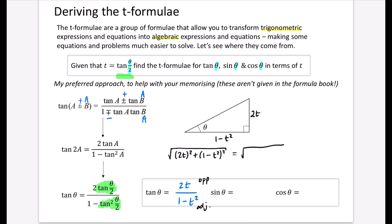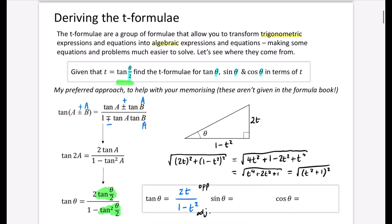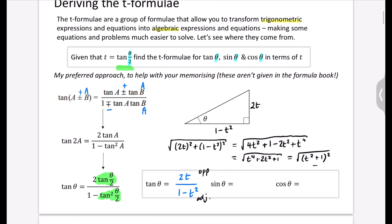Simplifying that: we've got T to the power of 4 plus 2T squared plus 1. We can factorise that as (T squared plus 1) squared — when you expand those double brackets, you get T to the power of 4 plus 2T squared plus 1. The square root of something squared is just T squared plus 1. The traditional way of writing it is 1 plus T squared.